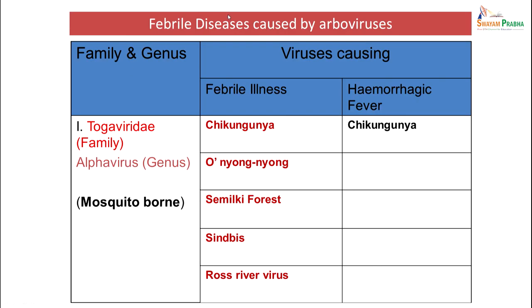Regarding febrile diseases caused by arboviruses, by family and genus: Togaviridae family, alpha virus genus — mosquito-borne — can cause febrile illness such as chikungunya, which can be plain febrile illness or with hemorrhagic fever. Also O'nyong-nyong fever, Semliki Forest fever, Sindbis fever, and Ross River virus are all transmitted through Togaviridae, alpha virus genus.